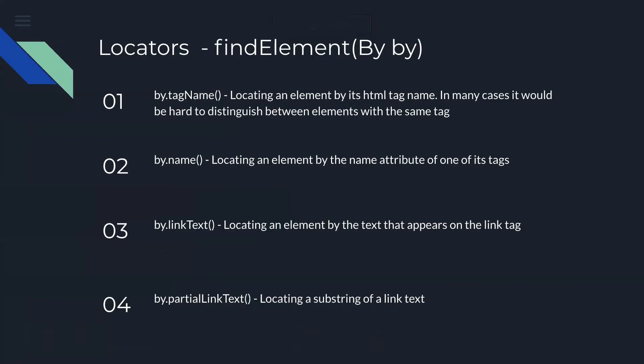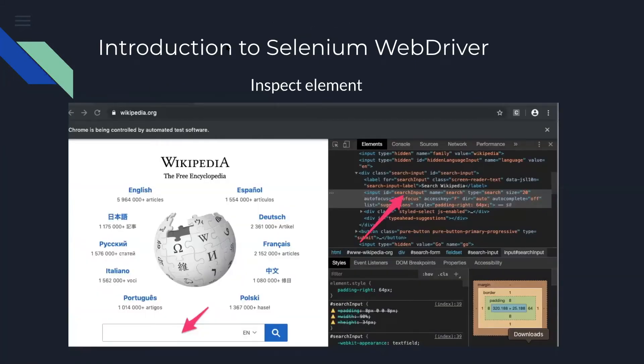Other locators that we have include link text — we can locate an element by the text that appears on the link tag — or locating by partial link text. It's not very common to use those locators but you can use them as well if you think they are unique enough. In this slide you can see the example that we just saw in Wikipedia.